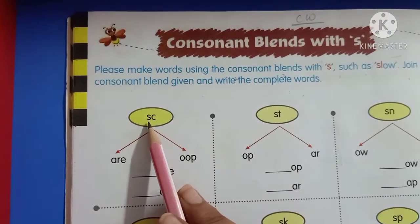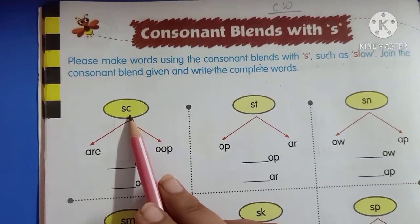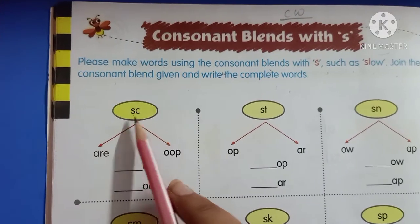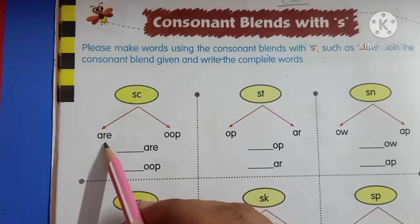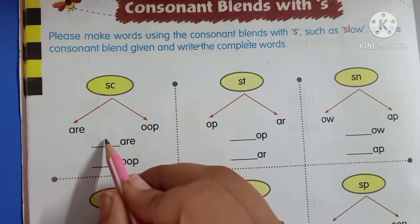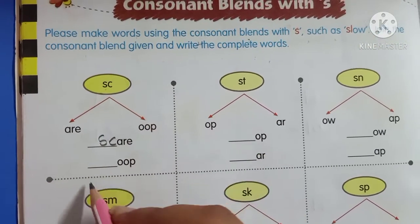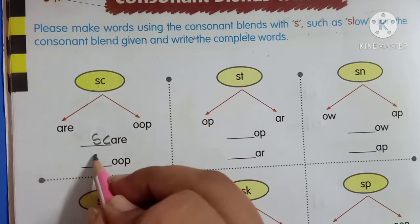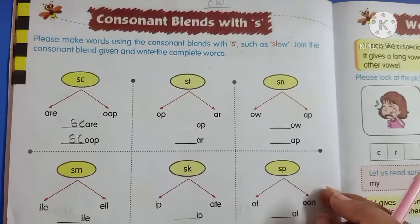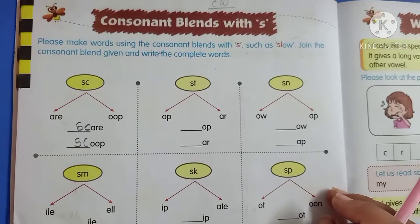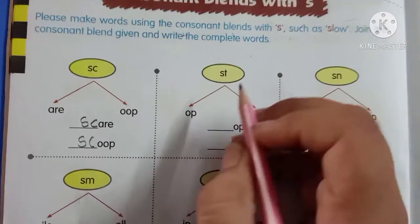Now kids, the blanks given to us are S and C. Our consonant blends are S and C. S, C, A, R — scare. Scoop. Okay? In our previous video we took the R consonant blends. Now we will do the S blends.